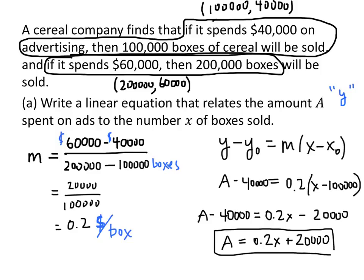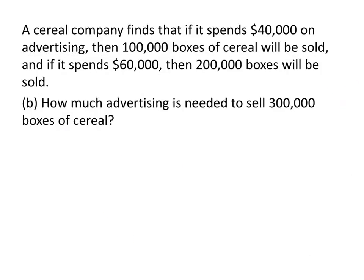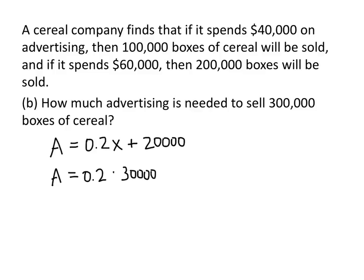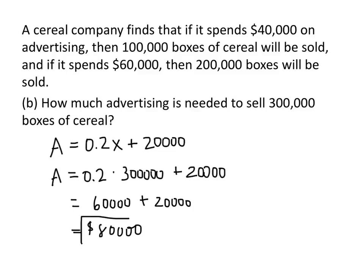That's the equation we were looking for. Now for the second part: how much advertising is needed to sell 300,000 boxes of cereal? Our relationship is A equals 0.2X plus 20,000, where A is the amount of money spent and X is the number of boxes sold. So we plug in 300,000 for X: A equals 0.2 times 300,000 plus 20,000. That gives 60,000 plus 20,000, which equals $80,000.